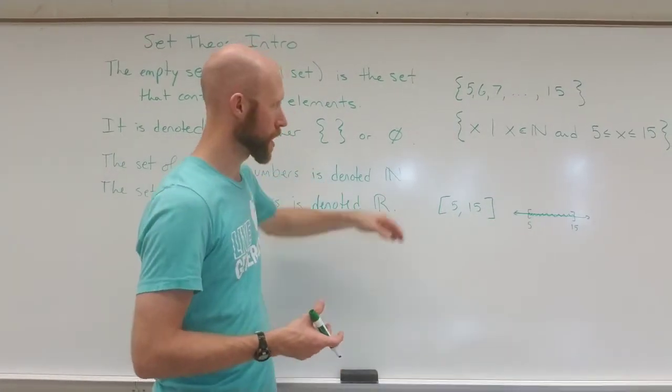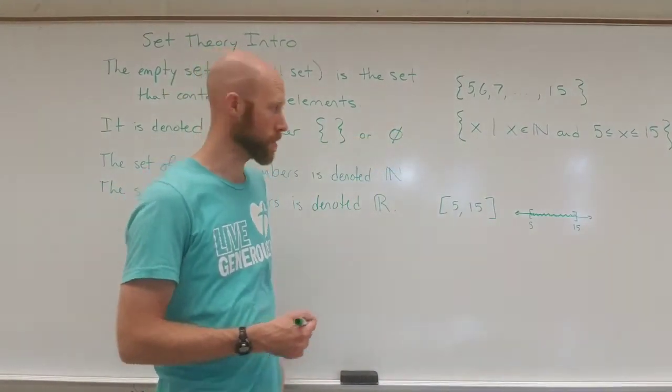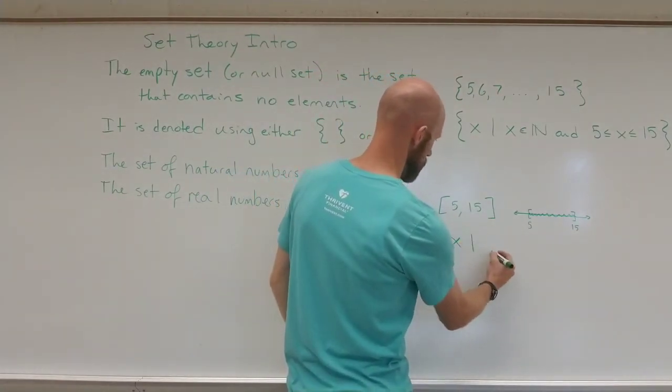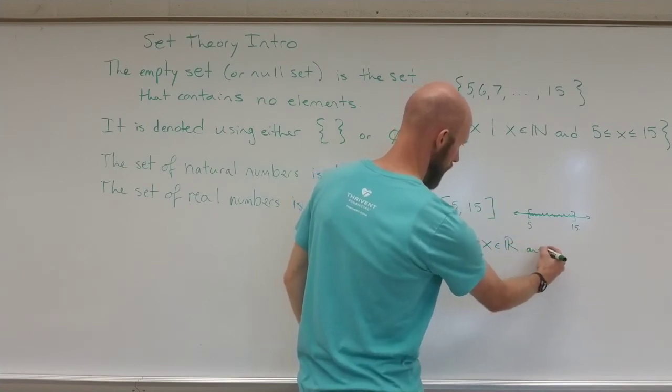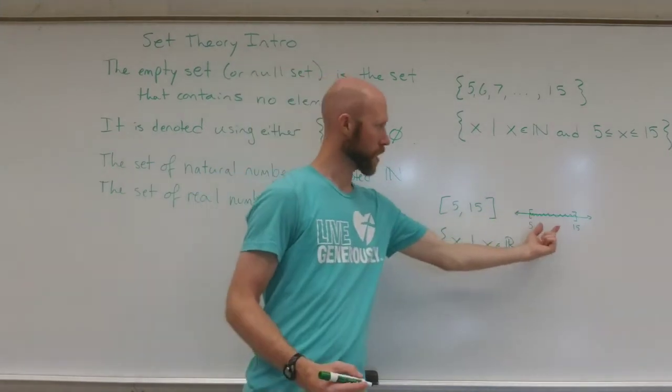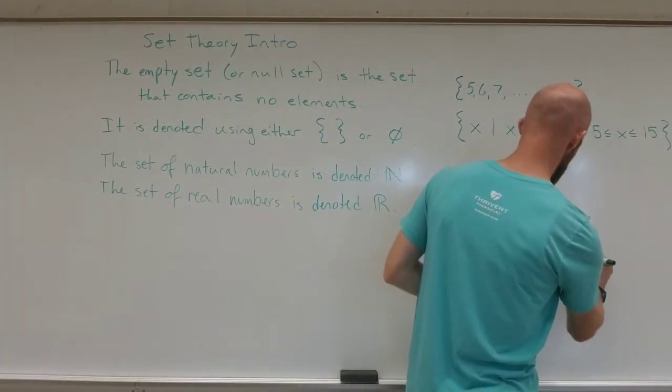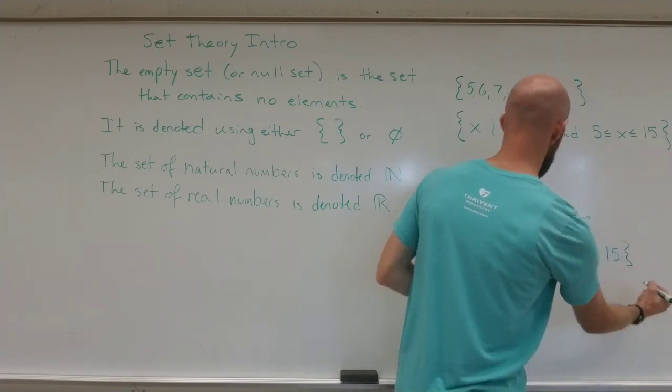And so we have to resort to the set builder notation, which in this case, we'd say x such that x is in the real numbers and then we include our inequality to show this relationship. So we could say 5 is less than or equal to x which is less than or equal to 15.